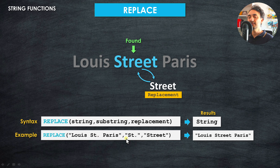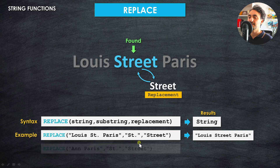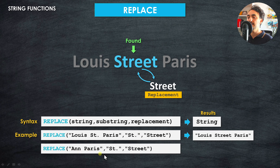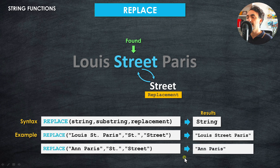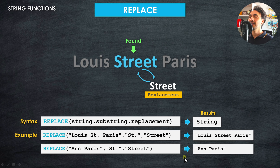What happens if the substring is not found? For example, if we search for 'St.' in a Paris address that doesn't contain it, Tableau simply returns the original text without changing anything. So nothing happens — it's really simple.